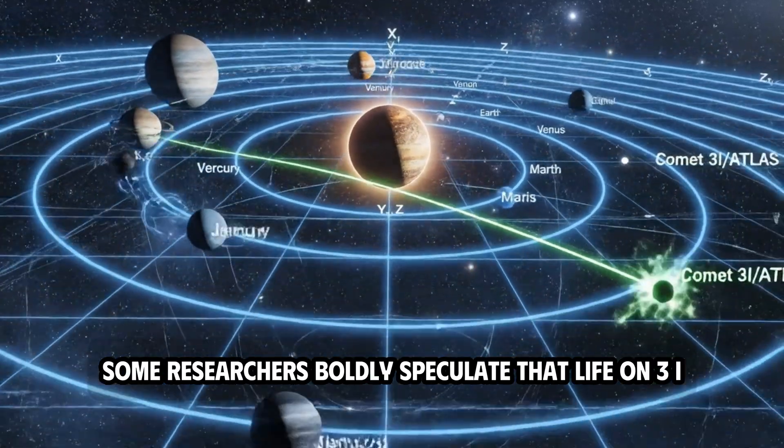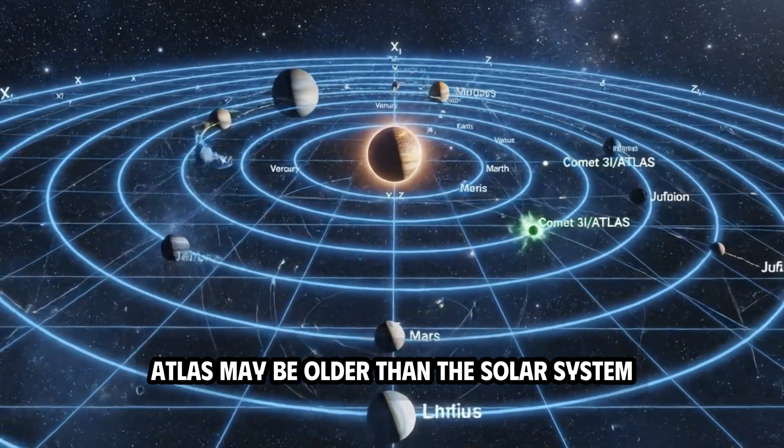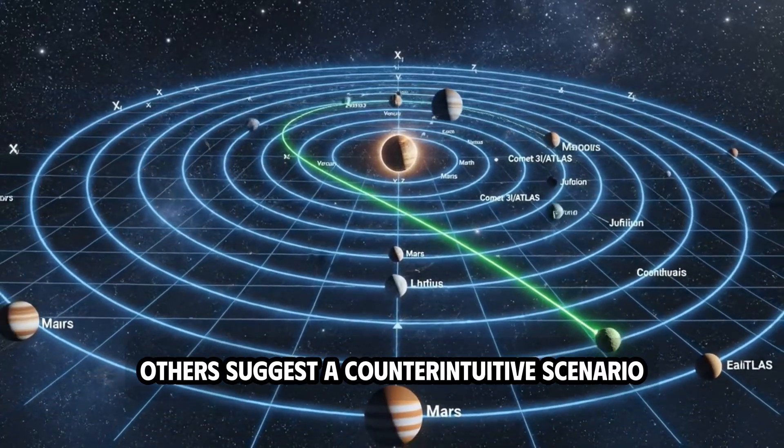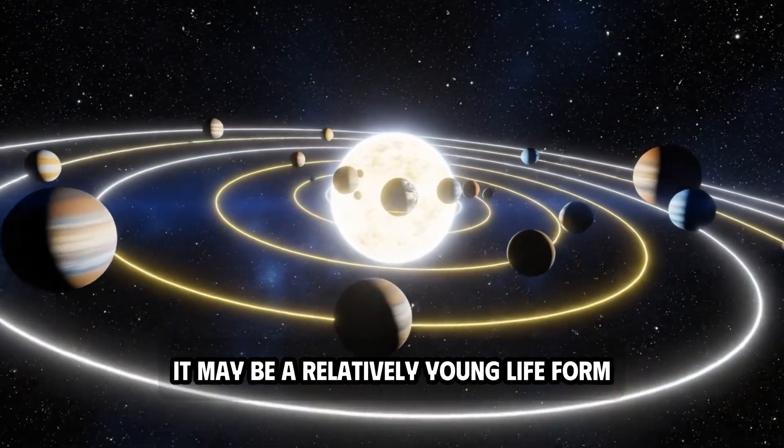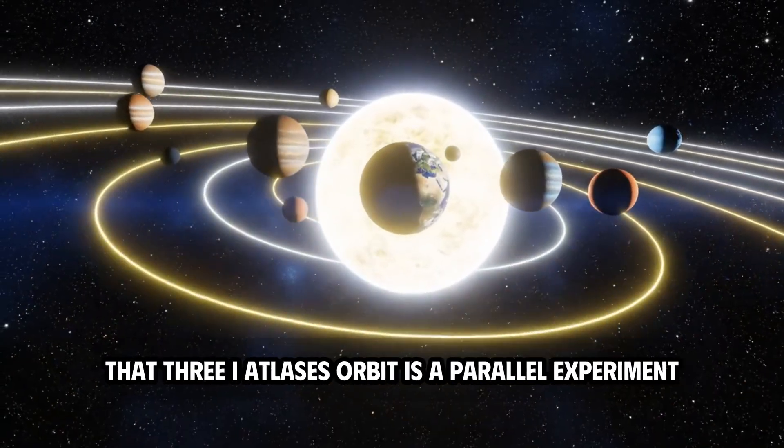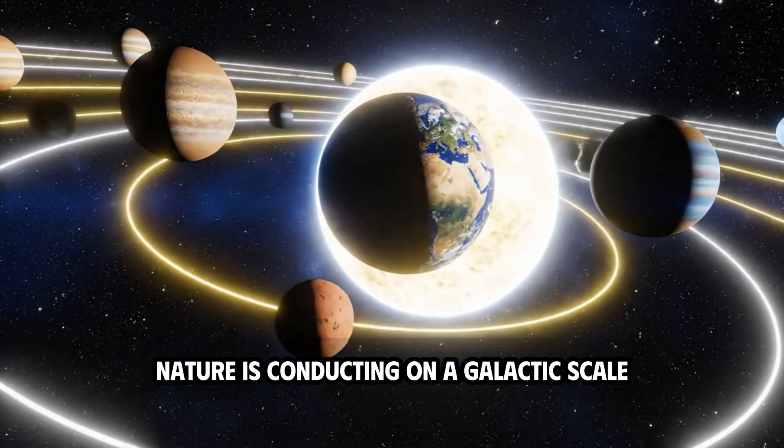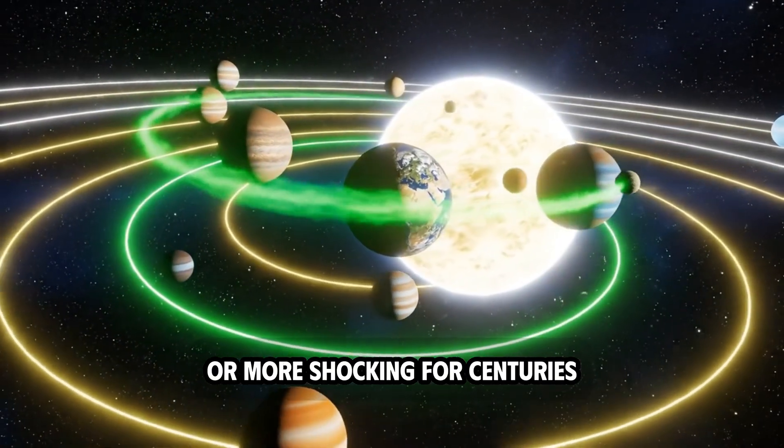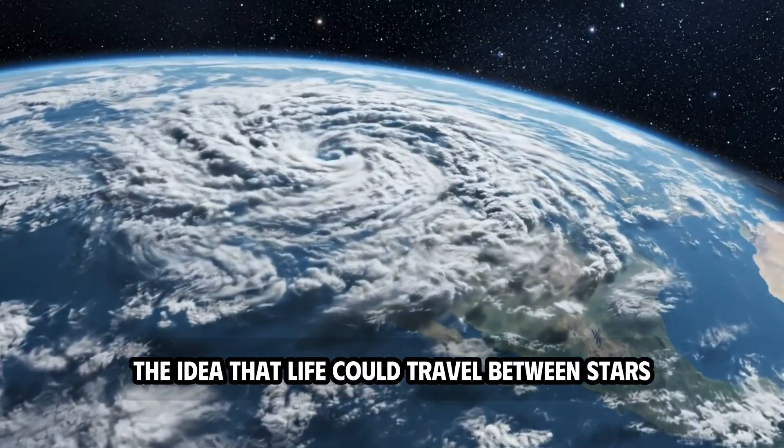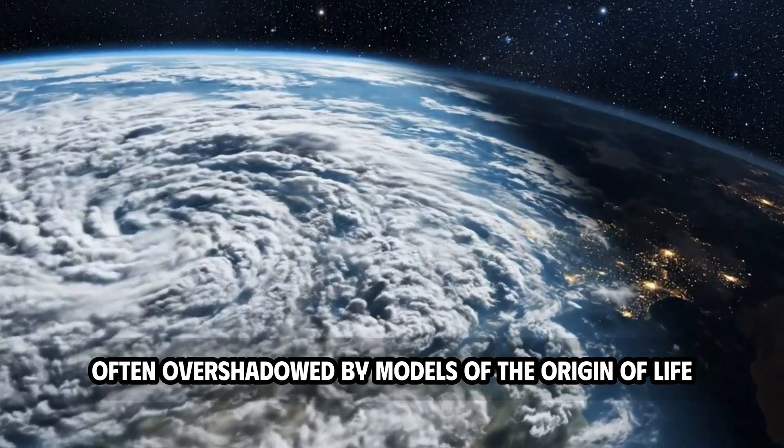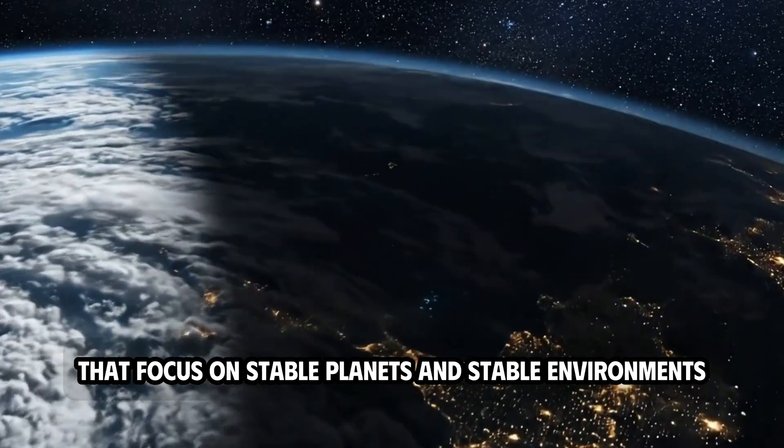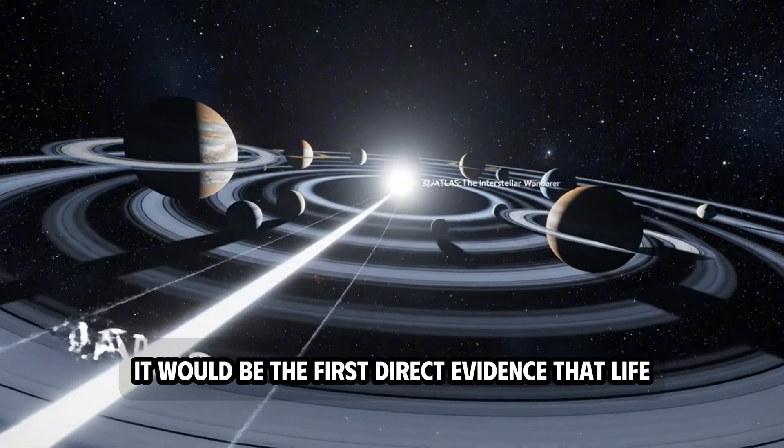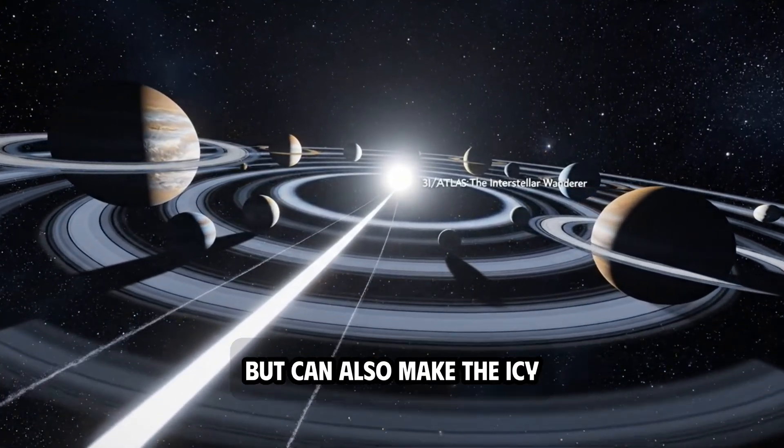Some researchers boldly speculate that life on 3i Atlas may be older than the solar system, descended from a lineage that diverged from the chemical ancestors of life on Earth billions of years ago. Others suggest a counterintuitive scenario: it may be a relatively young life form, evolving in conditions so different from Earth's that 3i Atlas's orbit is a parallel experiment nature is conducting on a galactic scale. The implications of panspermia have never been sharper or more shocking. If Atlas 3i is indeed confirmed as a host, it would be the first direct evidence that life not only exists beyond Earth, but can also make the icy, treacherous journey through interstellar space.